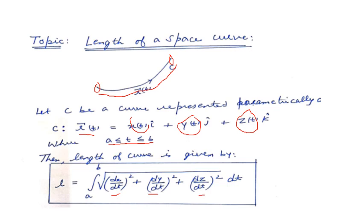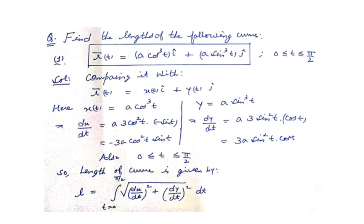Now let's go to the numerical based on this concept. The first numerical: find the length of the given curve where r(t) = a·cos³(t)·i + a·sin³(t)·j, where t lies between 0 and π/2. Here x is already in terms of t and y is already in terms of t.